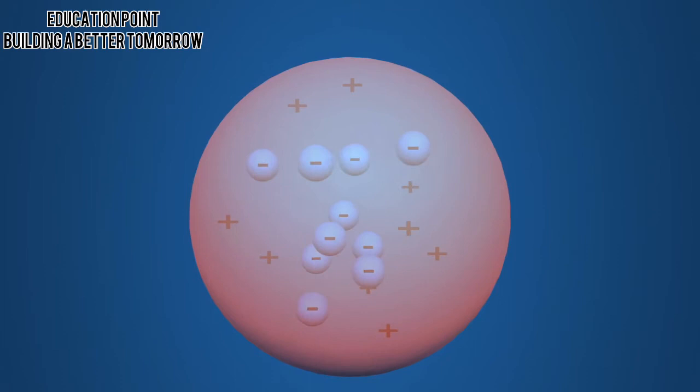In several experiments, he concluded that electrons can be extracted from the atoms of any element, and that thus, all atoms contain electrons. As atoms are electrically neutral, he assumed that the negatively charged electrons are embedded in a positively charged substance. Thomson referred to this as the plum pudding model because it reminded him of plums embedded in a pudding.